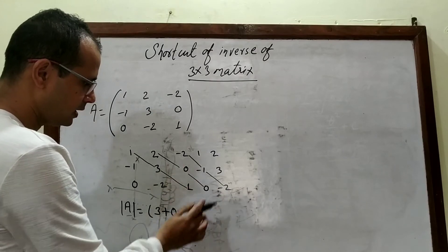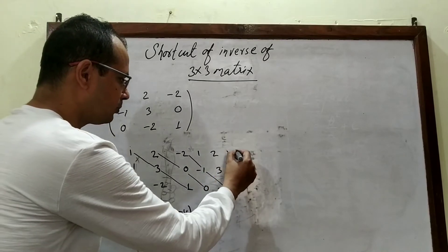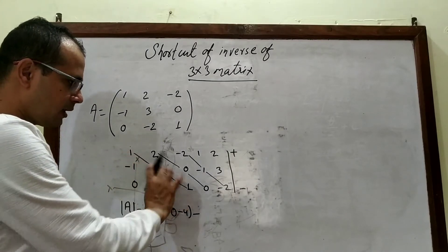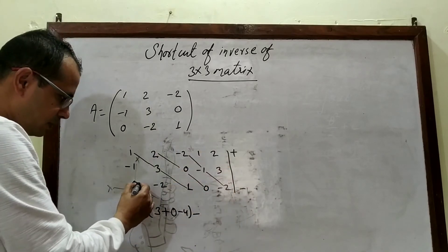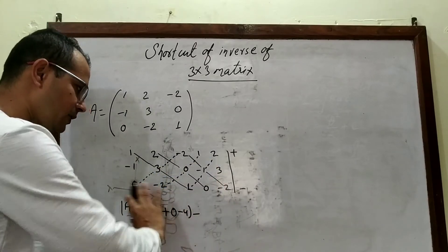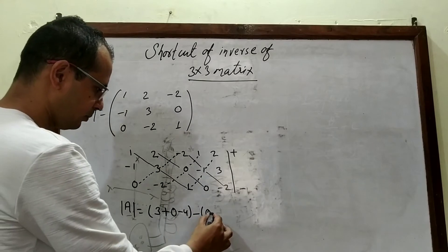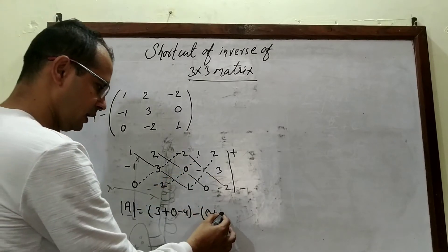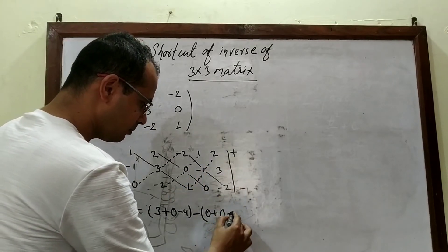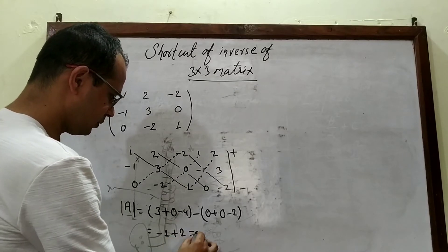When we start from the upper part we multiply and add, and when we start from the lower part we multiply and subtract. That gives minus of: 0×3×(-2) = 0, minus (-2)×0×1 = 0, minus 1×(-1)×2 = -2. So we get 3 + 0 - 4 - (0 + 0 - 2) = -1 + 2 = 1. The determinant is 1.